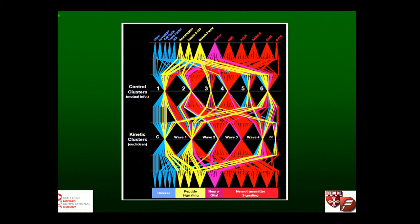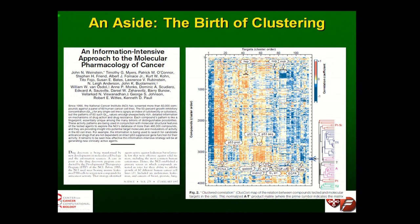The real birth of clustering and heat maps was probably a paper by John Weinstein and colleagues. What they were doing was actually not looking at gene expression levels, but looking at different drugs and their effects on viability of cell lines, and correlations between different compounds, targets, and their effects on different cell lines. They had little hierarchical clustering dendrograms showing the relationship. It was really the first time anyone combined hierarchical clustering and heat maps.